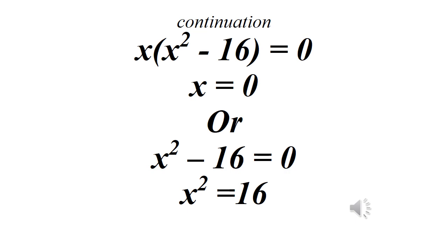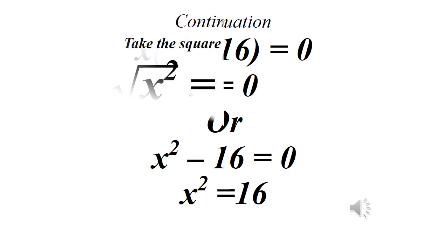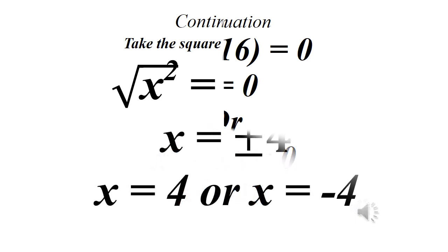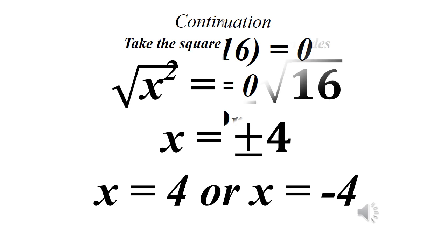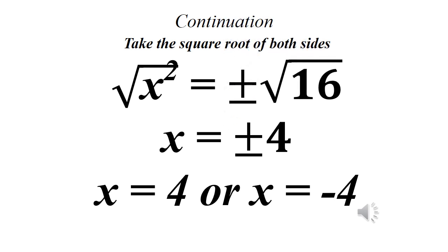So x equals 0, or x squared minus 16 equals 0. Adding 16 to both sides gives x squared equals 16. Taking the square root of both sides: x equals plus or minus 4. So x equals 4 or x equals minus 4.